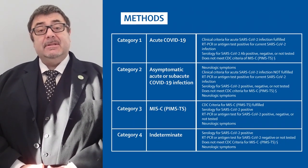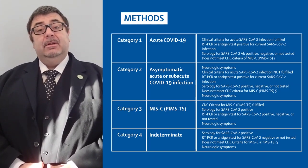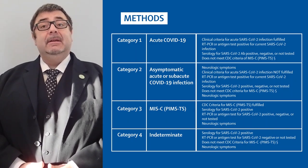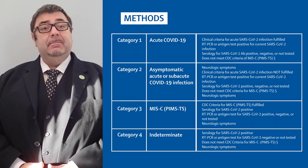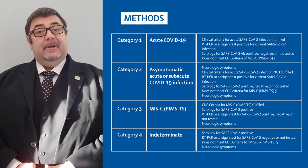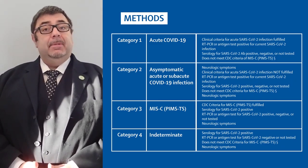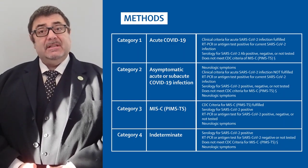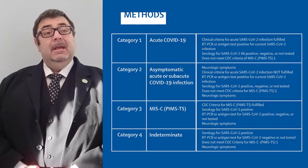In essence, the groups comprised: children with acute COVID-19; children who were asymptomatic for COVID-19; children who fulfilled the CDC criteria for multisystem inflammatory syndrome; and finally, children who could not be categorised into the above groups but had neurological disease explained by SARS-CoV-2 infection.